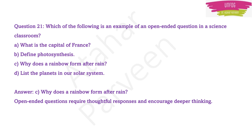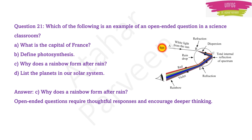The thoughtful response needed for the rainbow question involves: white light from the sun falls on a water droplet, where refraction takes place, then dispersion, then total internal reflection. The light ray comes back from the drop by touching the surface of the drop, refraction happens again, and then the rainbow is seen by the observer. So option C is the correct answer for this question.